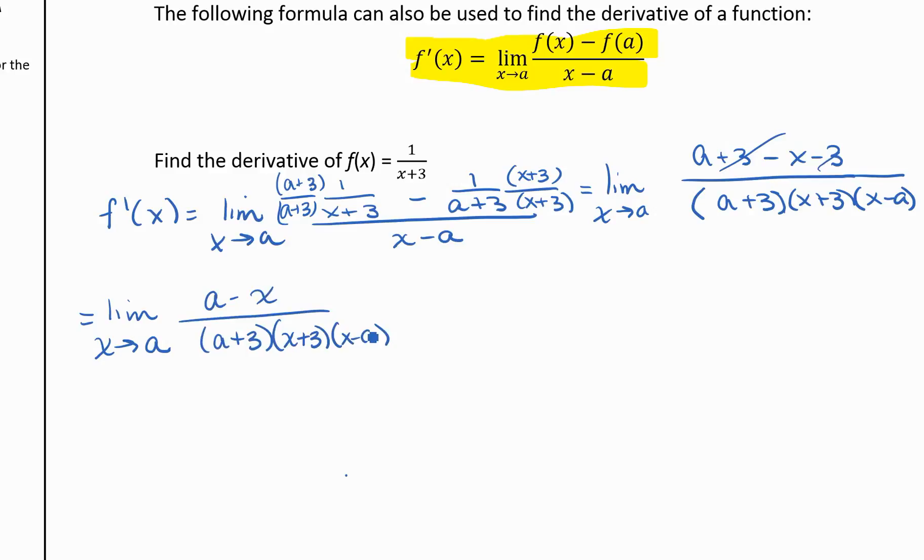We don't have x minus a in the numerator. We have a minus x, and a minus x is the same thing as negative 1 times x minus a. So we can flip a subtraction if we put it in parentheses and put a negative 1 out in front.